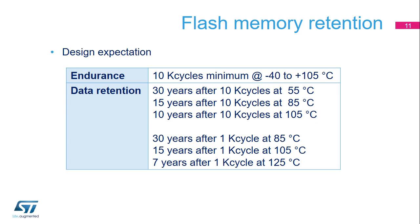Each program and erase operation can degrade the flash memory cell. After an accumulation of program and erase cycles, memory cells can become non-functional, causing memory errors. Endurance is the maximum number of program-erase sequences the flash memory can support without affecting its reliability. Data retention is defined as retaining a given data pattern for a given amount of time, and depends on the number of program-erase cycles and also on the temperature.